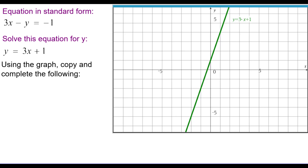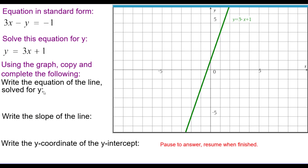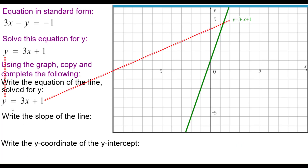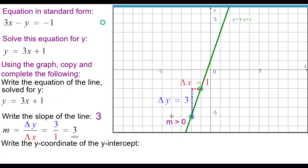Using the graph, we write the equation of the line solved for y: y equals 3x plus 1. To find the slope, I pick two points. Notice the slope is positive — the line slants uphill from left to right — with a change in y of 3 and a change in x of 1, giving a slope of positive 3. The y-intercept crosses the y-axis at (0, 1), so the y-coordinate of the y-intercept is positive 1.